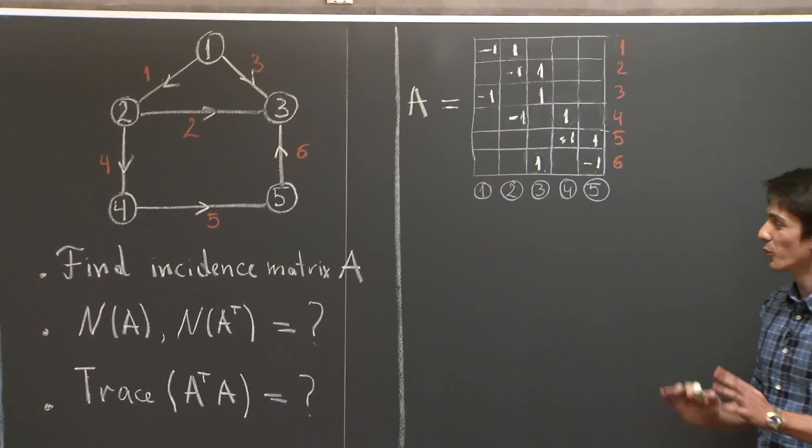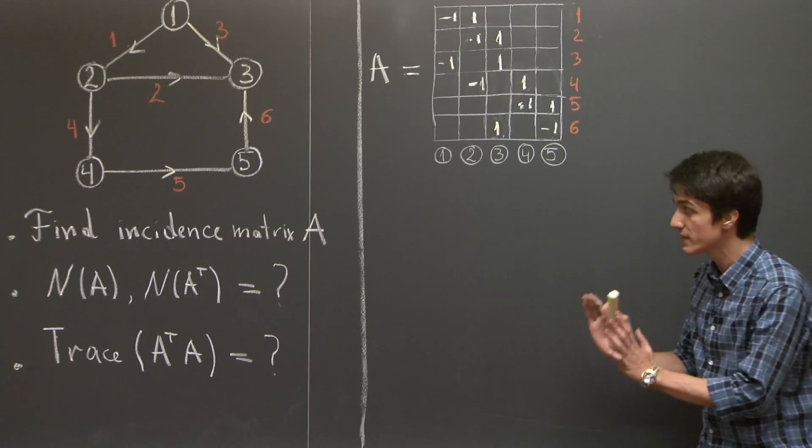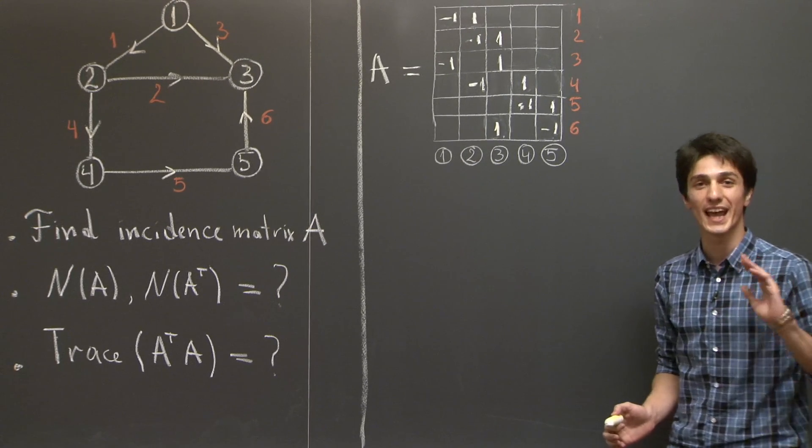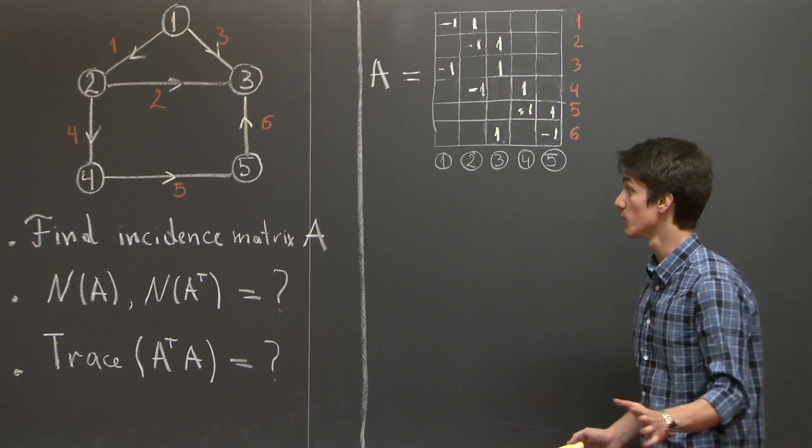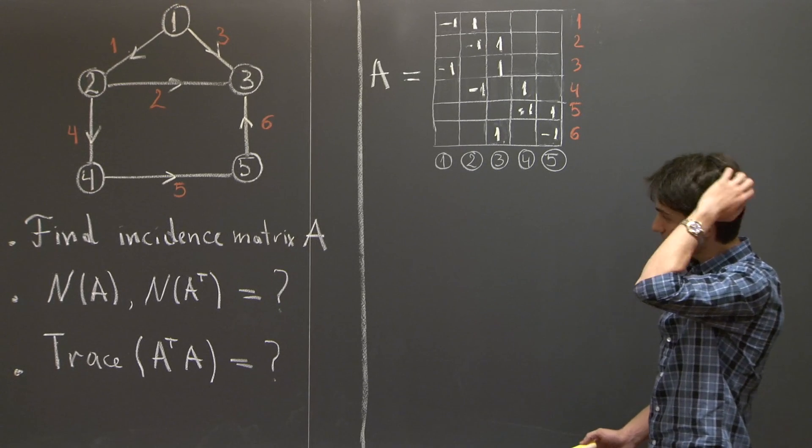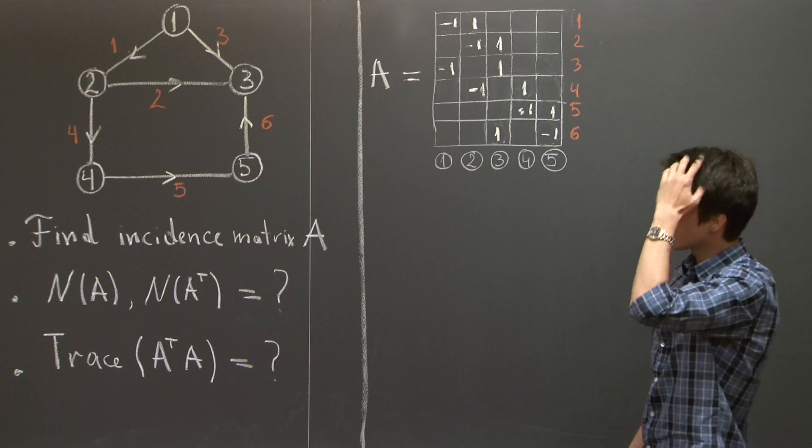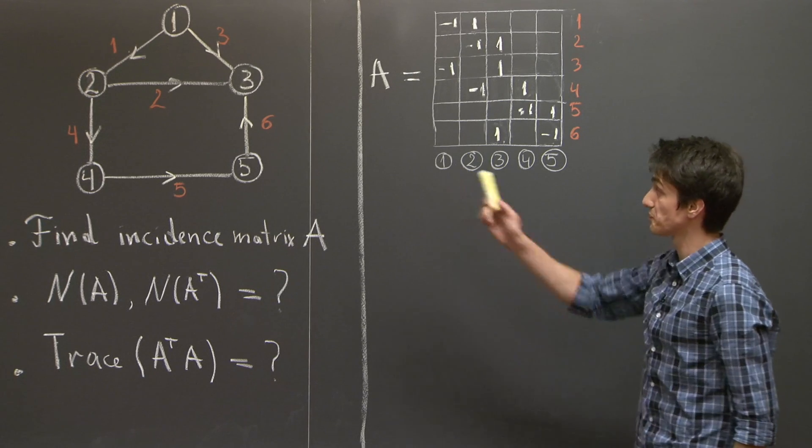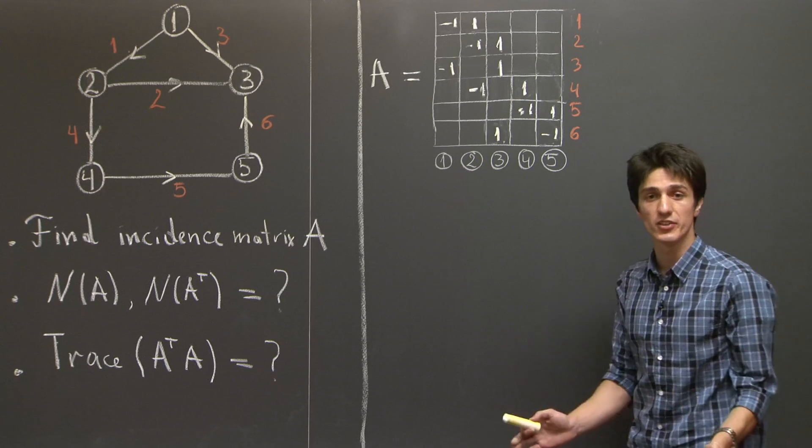Now we'll compute its null space, and we're going to do it without performing any row operations whatsoever. So in order to do this, it's helpful to look at the graph as an electric circuit,